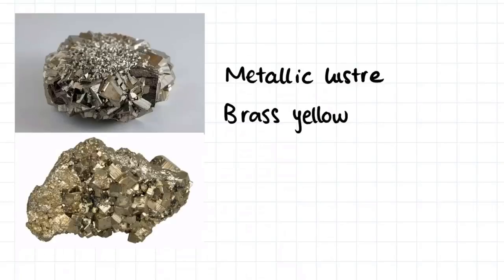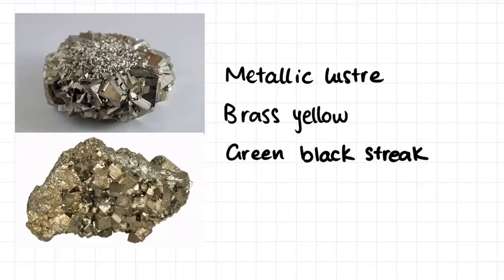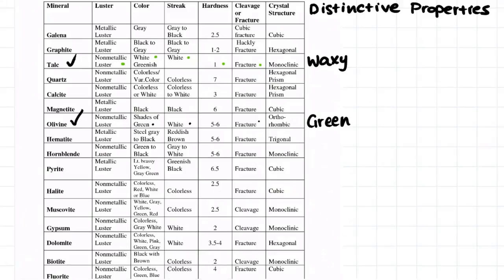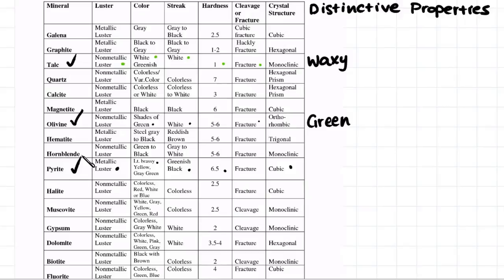Our next sample clearly has a metallic luster and has the color of a brassy yellow. We do a streak test on the mineral and we see that it has a greeny-black streak. We do a hardness test and we see that it has a hardness of around 6.5 on Mohs scale of hardness. And finally, we can see that the crystals form in very cubic shapes, which is a giveaway that we are looking at a pyrite mineral. Pyrite has a metallic luster, is brassy in color with a greenish-black streak, a hardness of 6.5, and develops cubic crystals. The main things that we look for in pyrite are the cubic crystals and the brassy color — these are the very distinctive properties of pyrite.